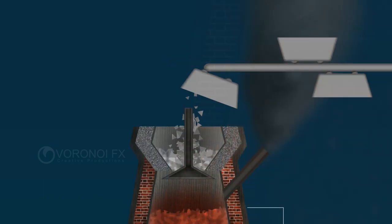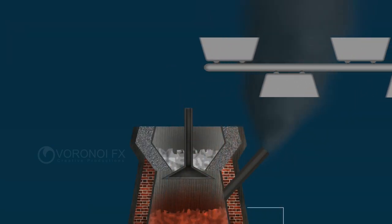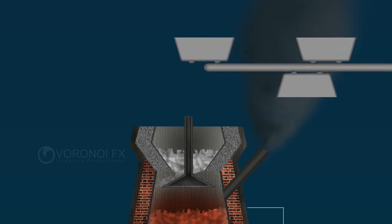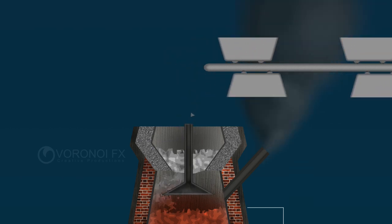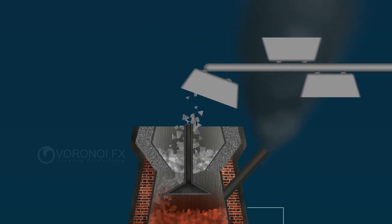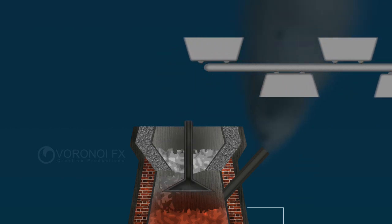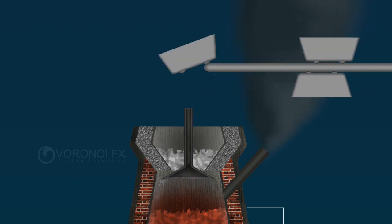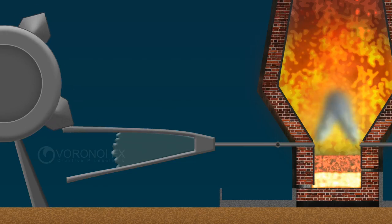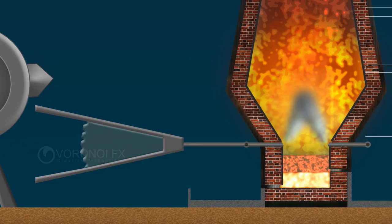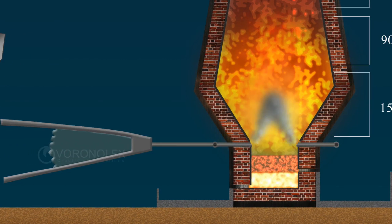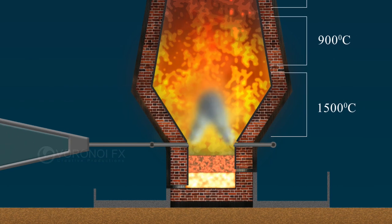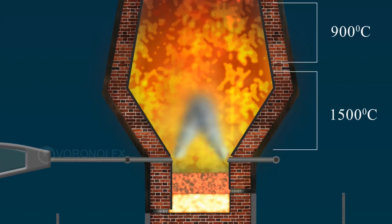The mixture of concentrated ore, coke and limestone are added from the top into the blast furnace. A powerful current of hot air is blown from the bottom simultaneously.